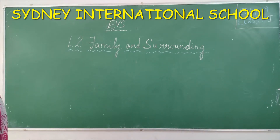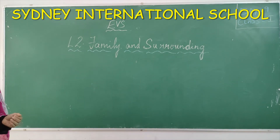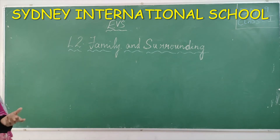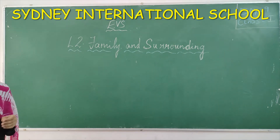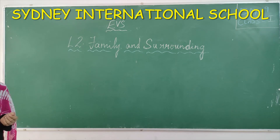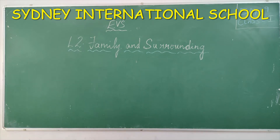Besides that, I also taught you natural and man-made things. Natural things are things which are given to us by God — for example, human beings, plants, animals, rivers, rocks, hills, and mountains are all natural. The things which are made by man are man-made things — for example, table, bench, and book. Man-made things are all non-living things. That was the topic we studied in the previous lesson.